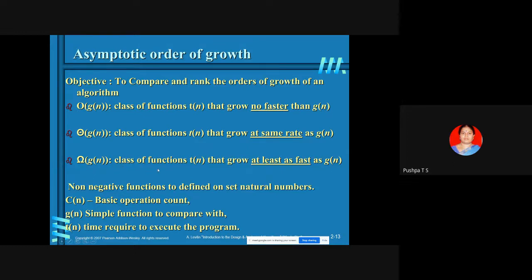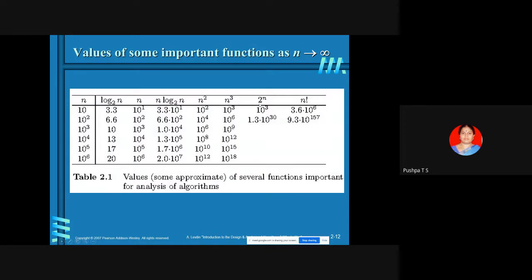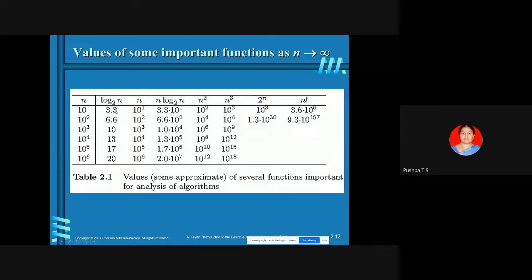G(N) is our standard. The standard functions or basic efficiency classes you can use include: log N to base 2, N, N log N to base 2, N squared, N cubed, 2 to the power N, and N factorial. G(N) is not associated with any constant — for example, you cannot write 2 log N + 2N + log N + 10 as a basic efficiency class. Basic efficiency classes are the simple functions listed in the table.